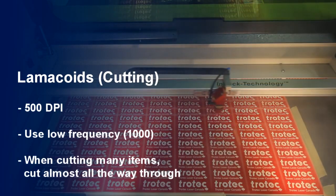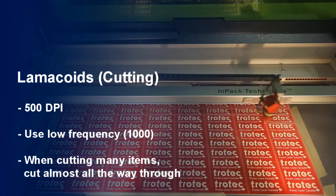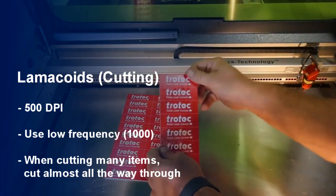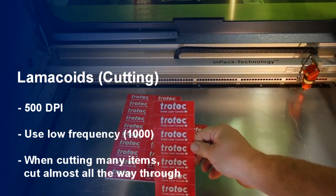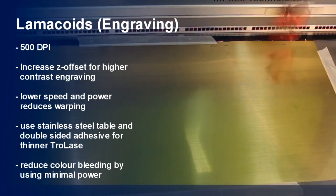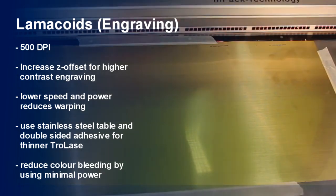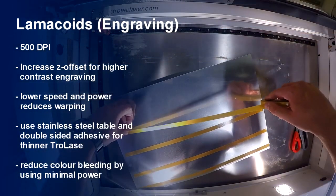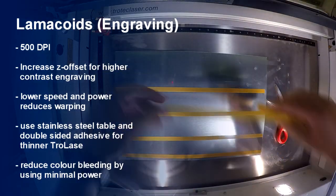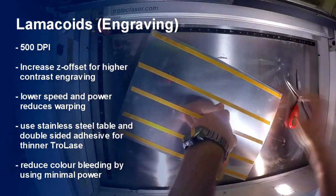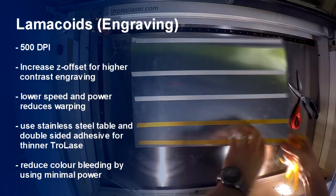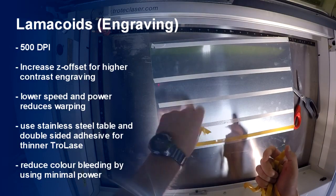Tips for cutting Trolase (lamicoids): use 500 DPI and low frequency like 1000 Hz. When cutting multiple pieces, do not cut all the way through — this allows you to clean the whole sheet and snap off pieces easily. For engraving on Trolase: use 500 DPI and increase Z offset value to create higher contrast engraving. A lower speed and power will reduce warping. Thinner materials warp easily with more heat, so use a flat cutting table and double-sided tape to prevent material from bowing upwards. Use minimum power to remove only the top layer of two-ply Trolase — engraving too deep creates excessive residue and color bleeding.